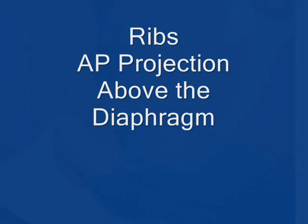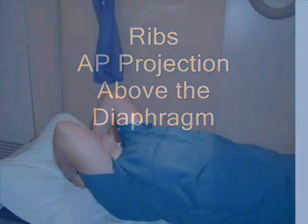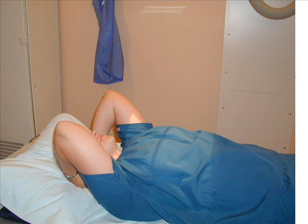Ribs AP projection above the diaphragm: position the patient in the erect or recumbent AP position. The diaphragm descends to its lowest level in the upright position, which should be used for the upper ribs when the patient's condition permits. Shield the gonads, and for the upper ribcage, adjust the image receptor approximately one and a half inches above the shoulders.